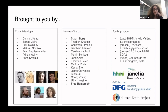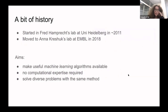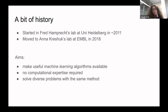First about the team: Ilastik is a fairly old project and a lot of people contributed. This is the current team — they're not all working on Ilastik full-time but they're all committed to its success. Many thanks to the funders as well. Historically, Ilastik was started in Fred Hamprecht's lab at the University of Heidelberg back in 2010 or 2011. As a postdoc in Fred's lab I took over the leadership, and when I started my own lab at EMBL in 2018, it moved there with me. The aim of Ilastik is to make useful machine learning algorithms available to people without computational expertise, and to solve diverse problems with the same approach.